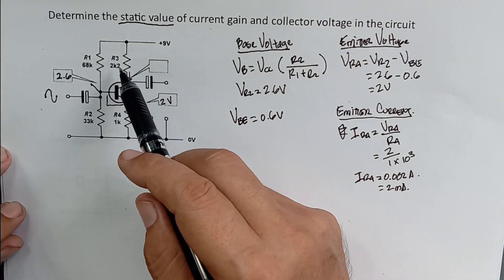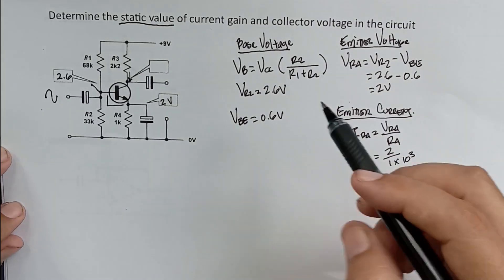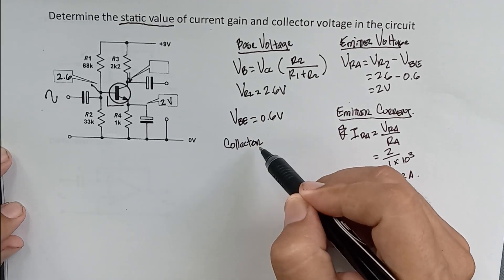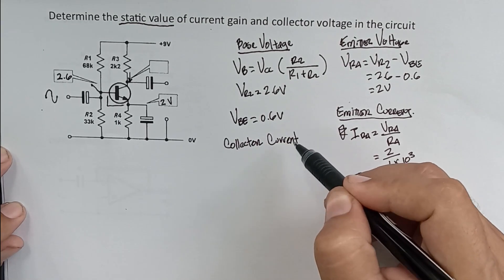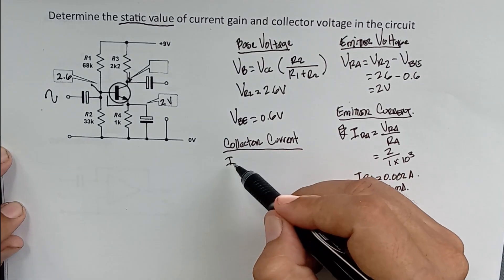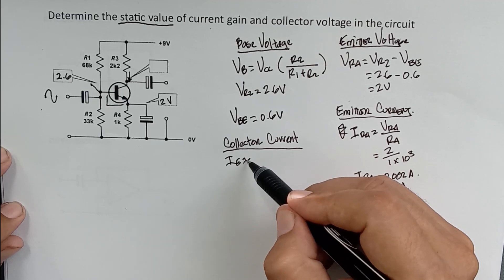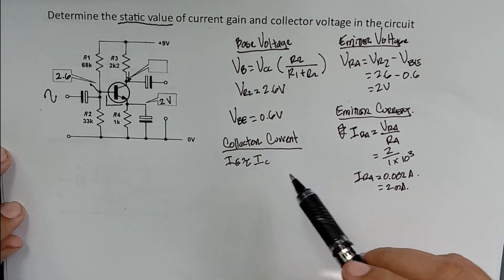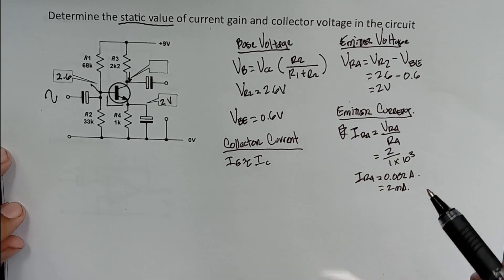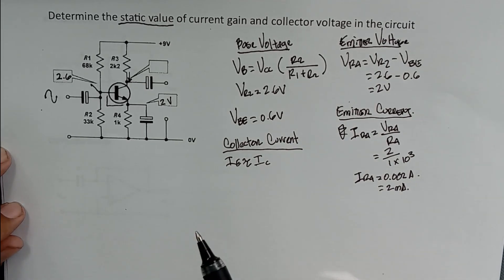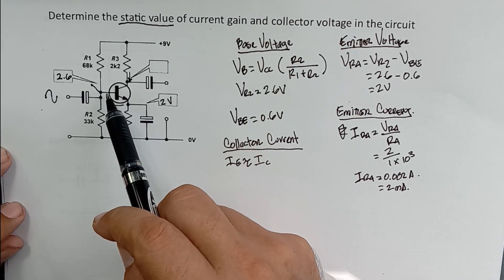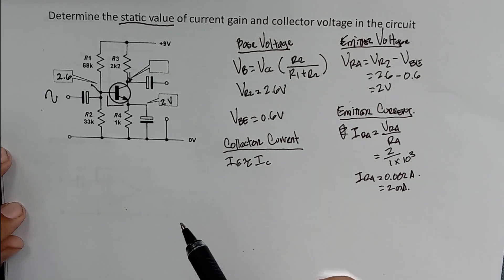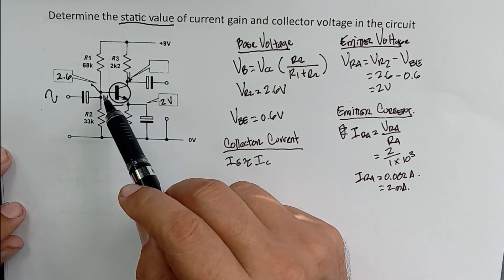What is the current flowing through R3, the collector resistor? The emitter current is approximately equal to the collector current. So we can say the collector current is approximately 2 milliamps. But to be more exact, we should first calculate the base current.